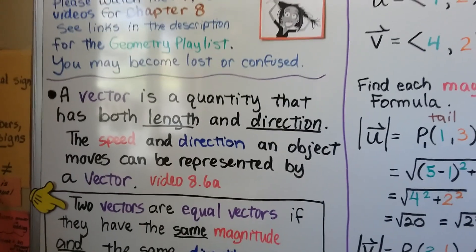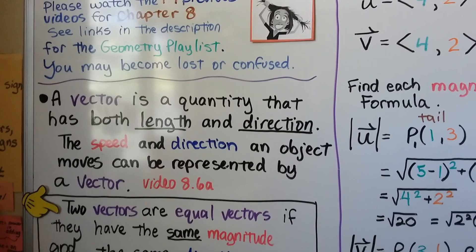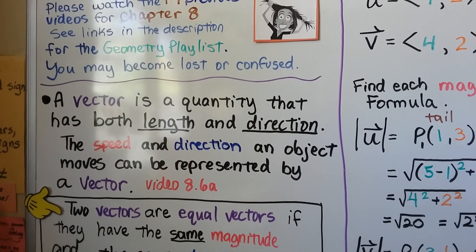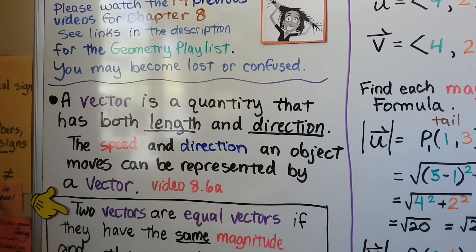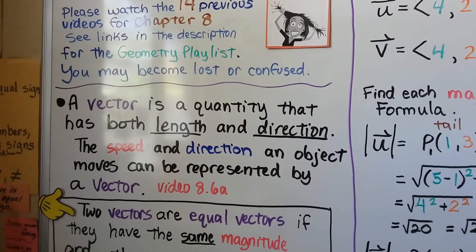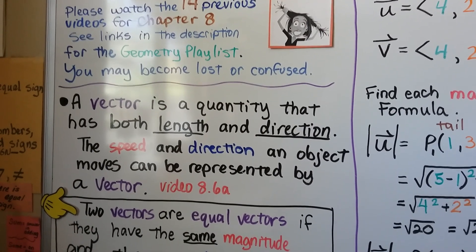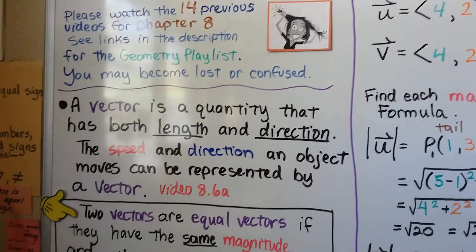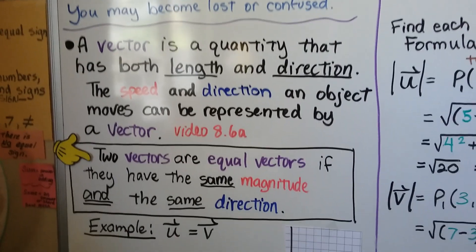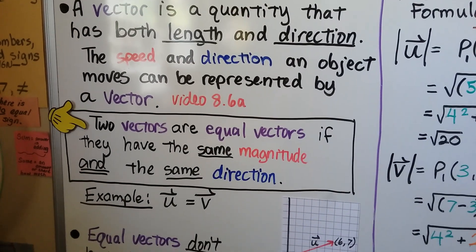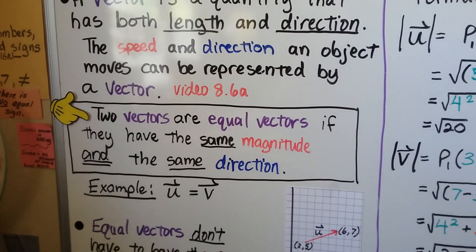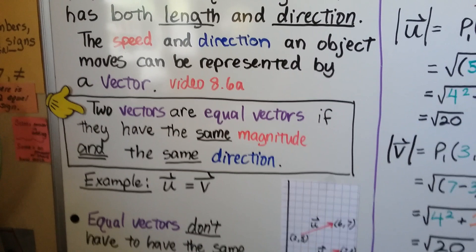We talked about this in the last video. A vector is a quantity that has both length and direction. The speed and direction an object moves can be represented by a vector. Two vectors are equal vectors if they have the same magnitude and the same direction.